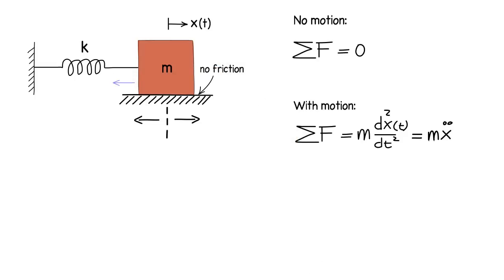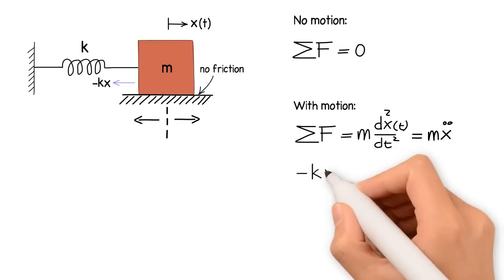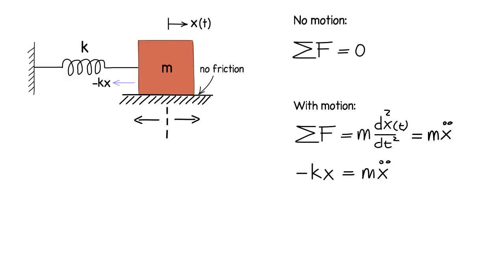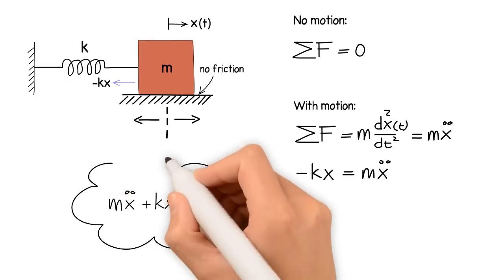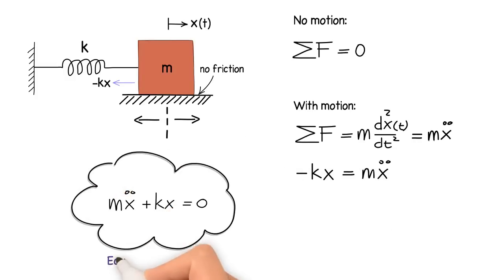Now we know that there is a reaction force kx by the spring, opposite the direction of the motion of the mass, and therefore minus kx equals m x double dot. If we arrange the equation, we get m x double dot plus kx equals zero, and this equation we call the equation of motion.